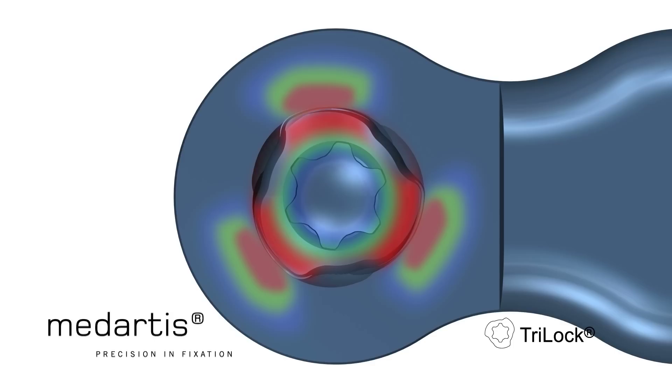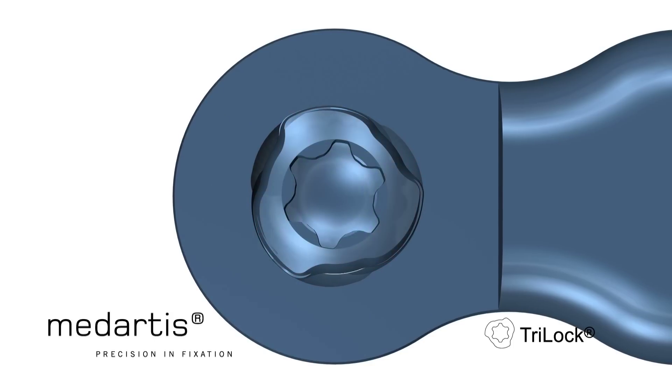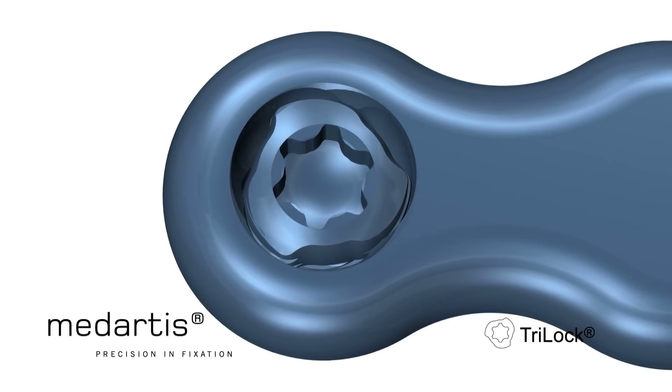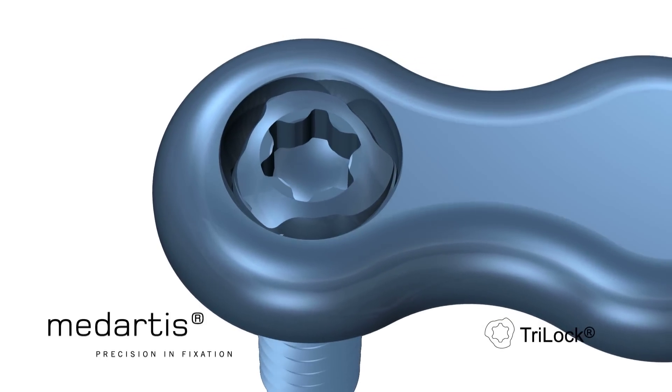This resulting radial force or friction connection between the screw head and plate hole creates the secure and angular stable wedge locking. A distinguishing feature of Tri-Lock is its multi-directionality.